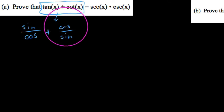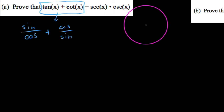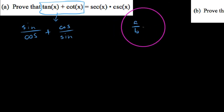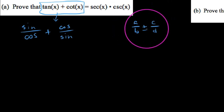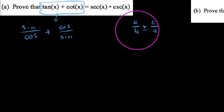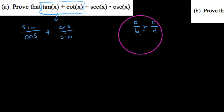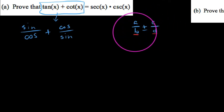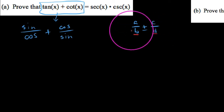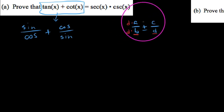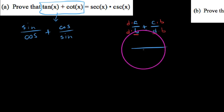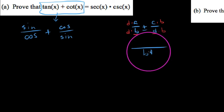So far we've rewritten the left-hand side to look like sine over cosine plus cosine over sine. At this point, I want to review how one adds or subtracts two fractions — you get a common denominator. In general, if we had a over b plus or minus c over d, the common denominator would just be the product of these two denominators if they don't have any common factors. So bd would be our common denominator.